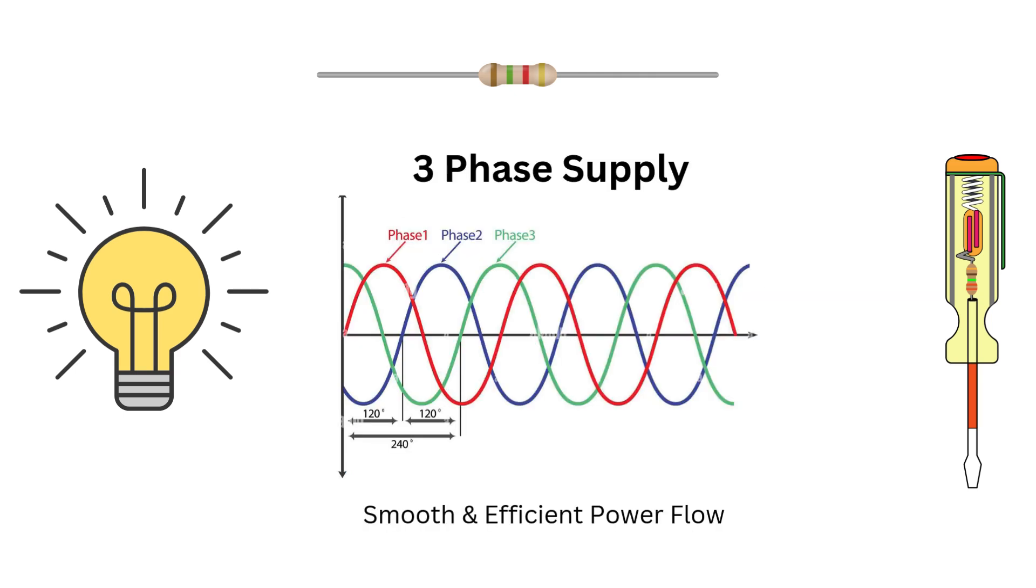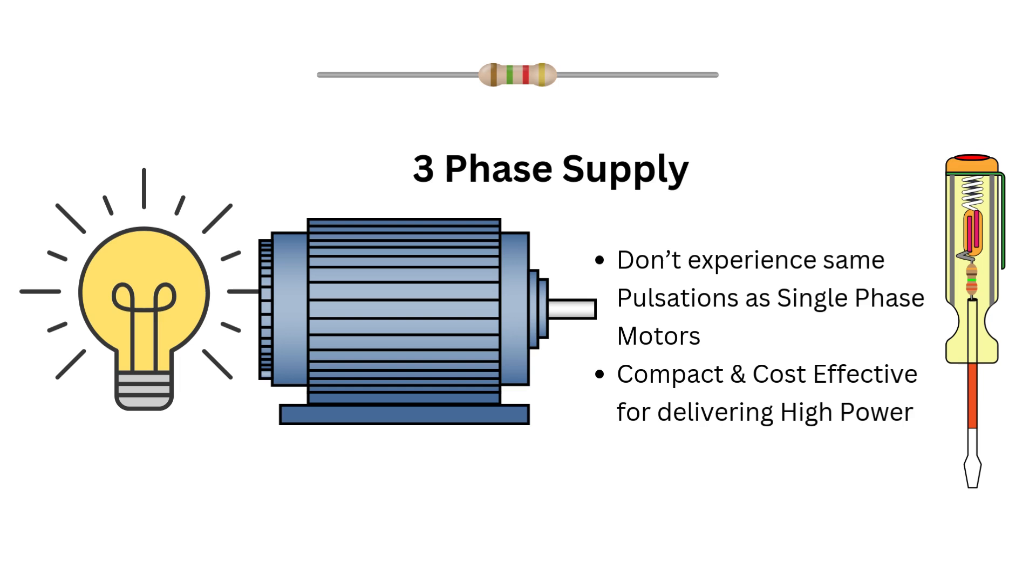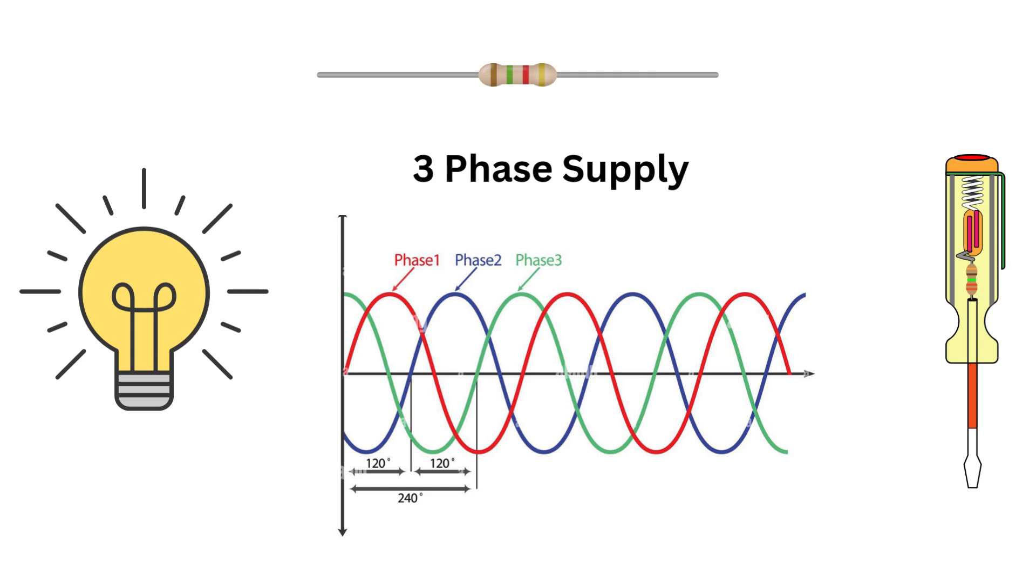Three phase systems are chosen because they provide a smoother and more efficient power flow. Motors running on three phase power don't experience the same pulsations as single phase motors. Plus, they are more compact and cost effective for delivering high power. In short, three phase is the king of power distribution for industries and now you know why.